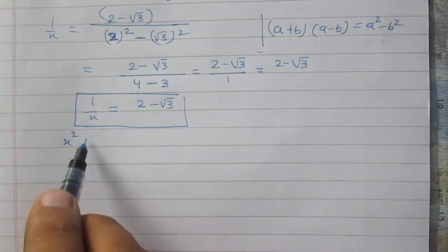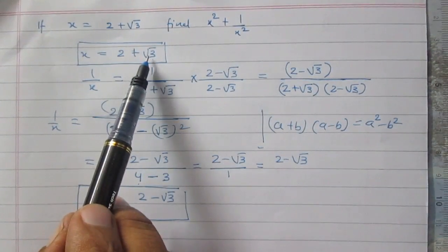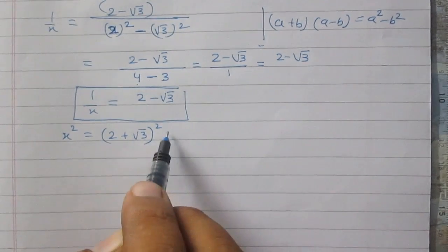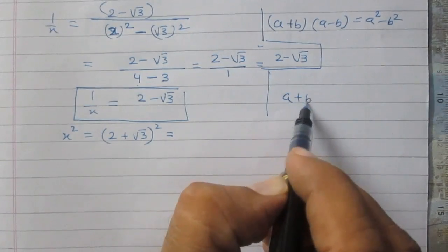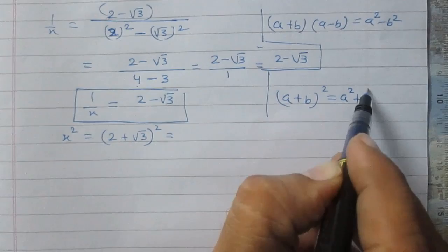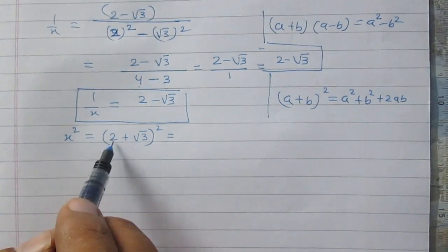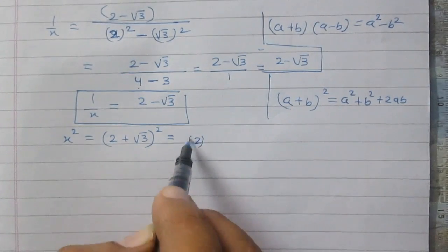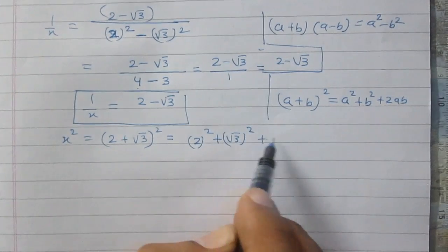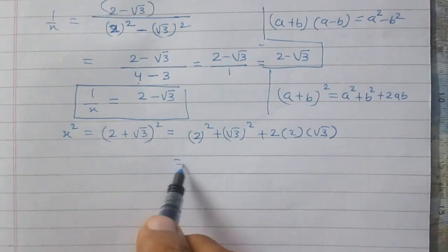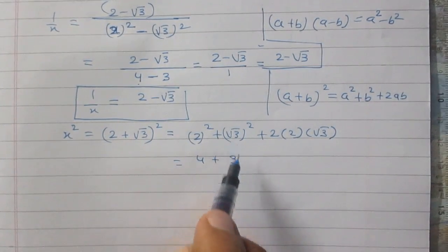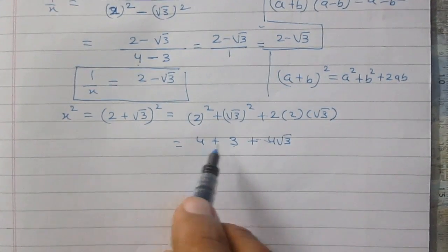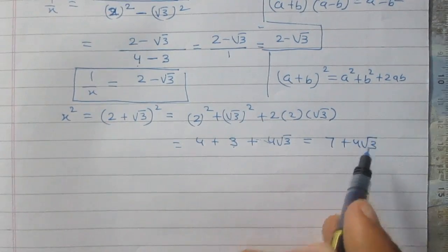Now let us consider x square. Since x is equal to 2 plus square root 3, x square will be 2 plus square root 3 whole square. Applying the identity a plus b whole square equals a square plus b square plus twice of ab, where a stands for 2 and b stands for square root 3, we get 4 plus 3 plus 4 times square root 3, which is 7 plus 4 times square root 3.